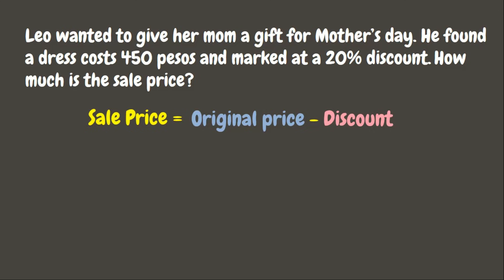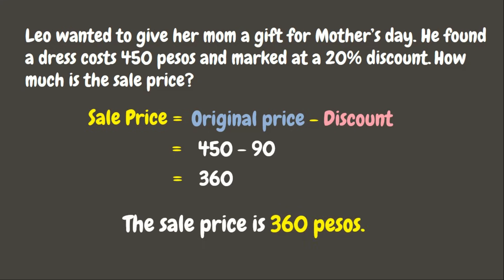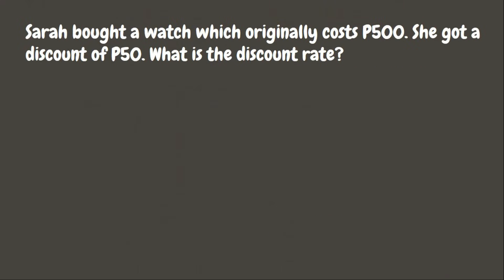To solve for the sale price, we need to subtract the discount from the original price. The original price of the dress is 450 pesos, and the discount we solved earlier is 90 pesos. 450 minus 90 gives us 360 pesos. This means the sale price of the dress is 360 pesos. Wonderful!